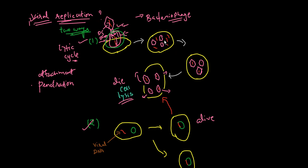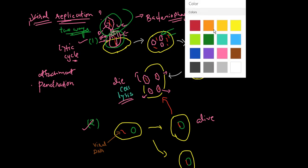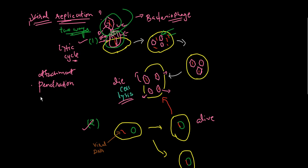After DNA injection, the head or capsid of the bacteriophage remains on the outside of the cell wall. Once the DNA is injected into the host bacterium's cytoplasm, biosynthesis takes place. The T-even bacteriophage uses the host bacterium's nucleotides and enzymes to make copies of bacteriophage DNA.